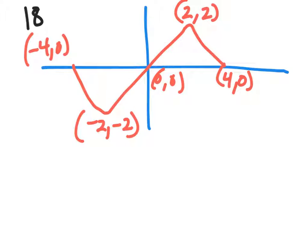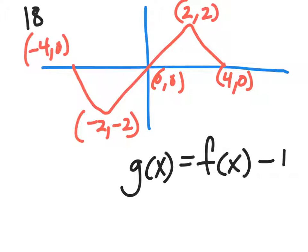For problem 18, we're given the graph of f of x, and we're asked to find the graph of f of x minus 1. What this means is that we're taking f of x, the y value, and we're subtracting each point by 1.